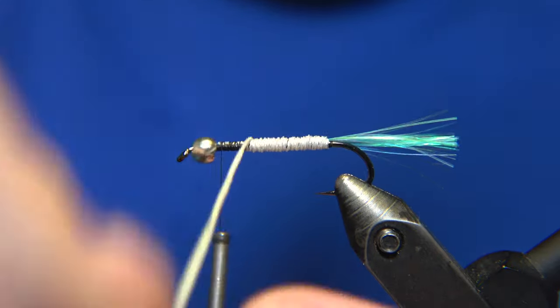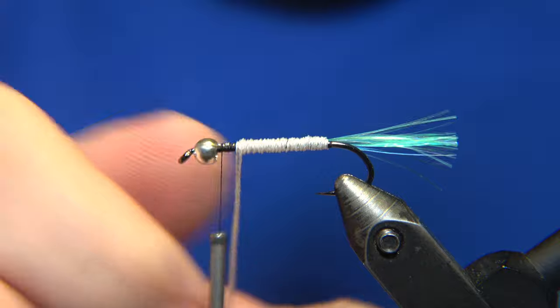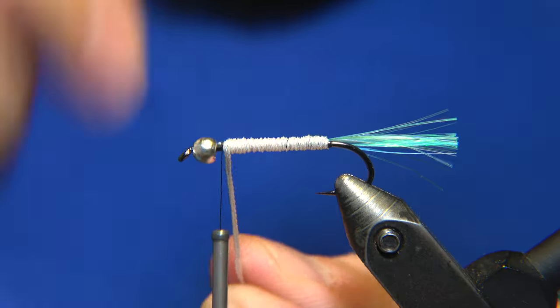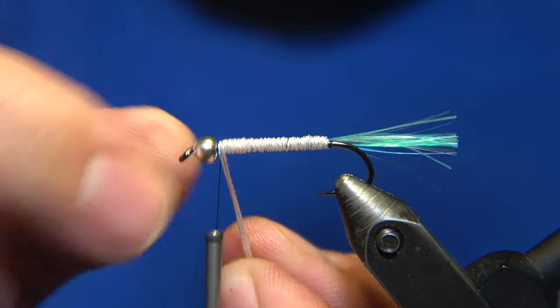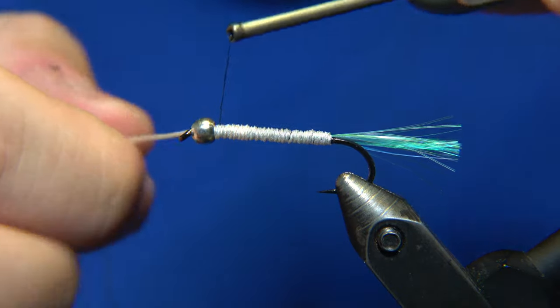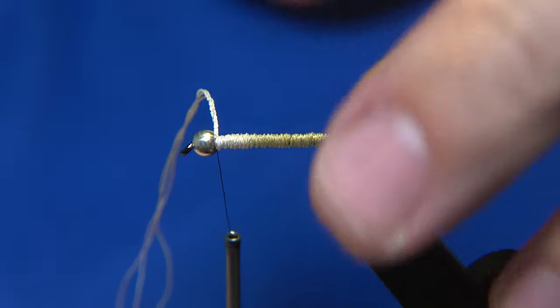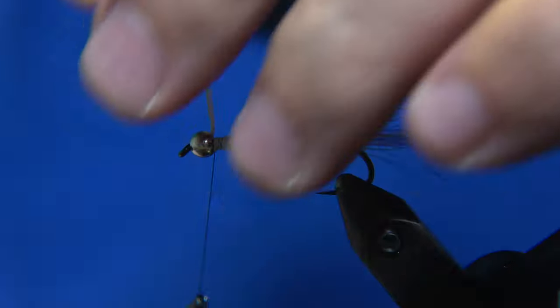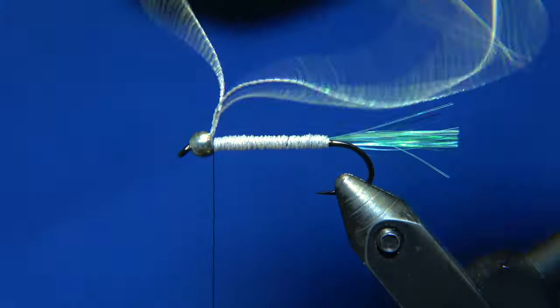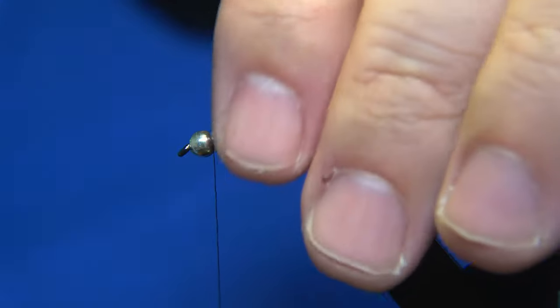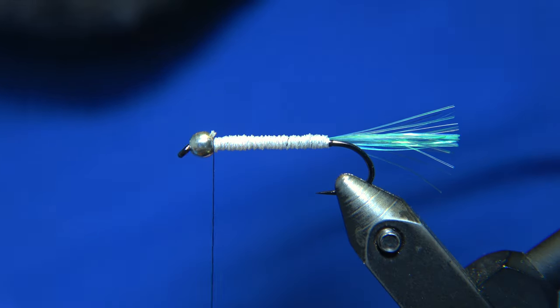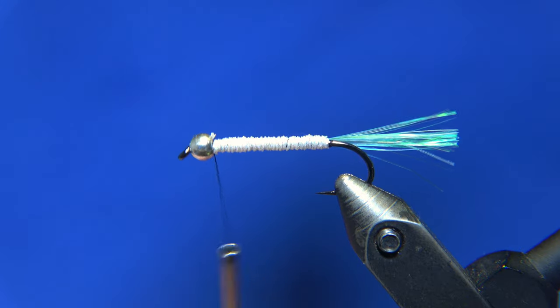And then we will just wrap this forward in tight wraps, and leave no, preferably no space between. And then we do it like so, not any further, maybe one more here. Then we lock it in with our thread, with a few secure wraps. This is a very simple fly. We can cut away now the rest of the DMC yarn to use for the next fly.